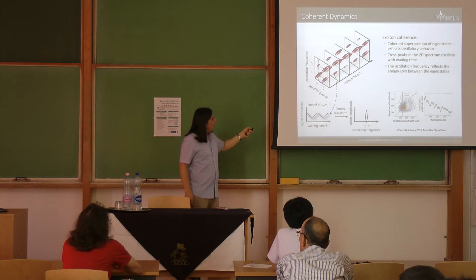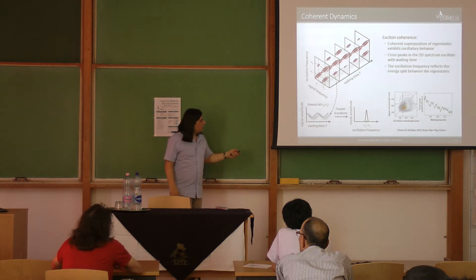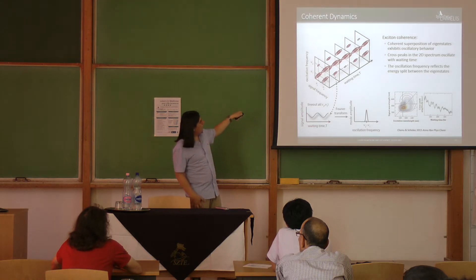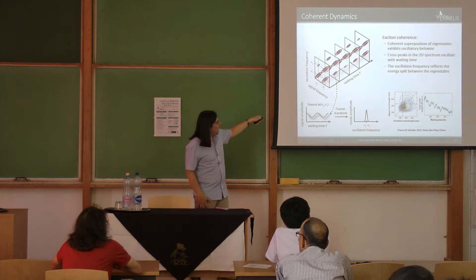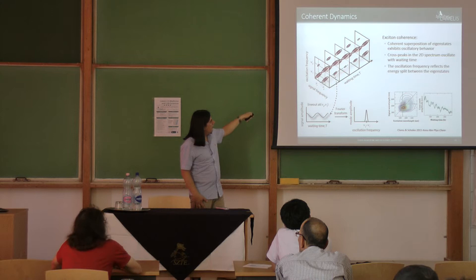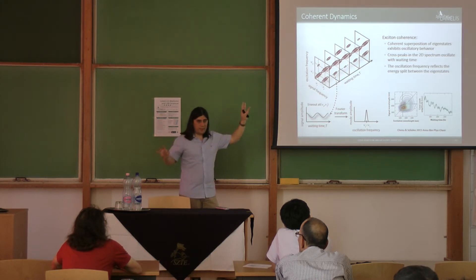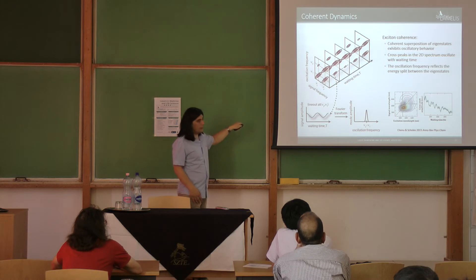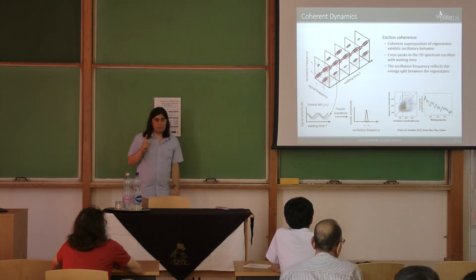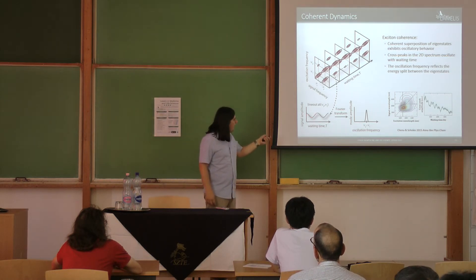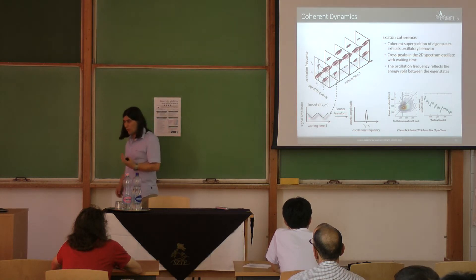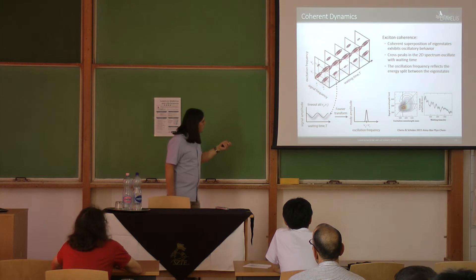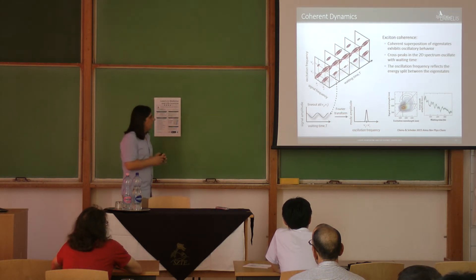Because if you have coherence between exciton or excited states, then the cross peaks of these excited states, they will pulse, fluctuate. They will show these oscillations. So we have this two-dimensional spectrum. And if we follow in time, the cross peak will, one cross peak will disappear, the other will appear in phase or out of phase, but coherently. So if you plot one cross peak intensity in time, that's population waiting time, and then you have oscillation. The oscillation frequency is the difference between the two exciton states energies.